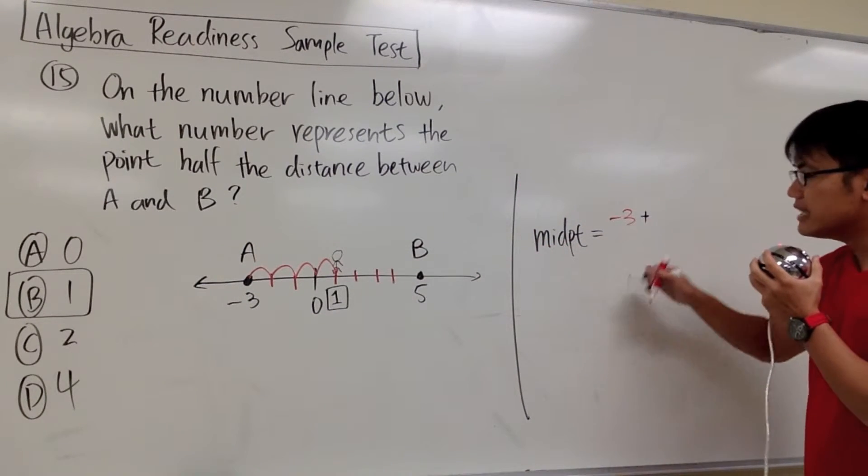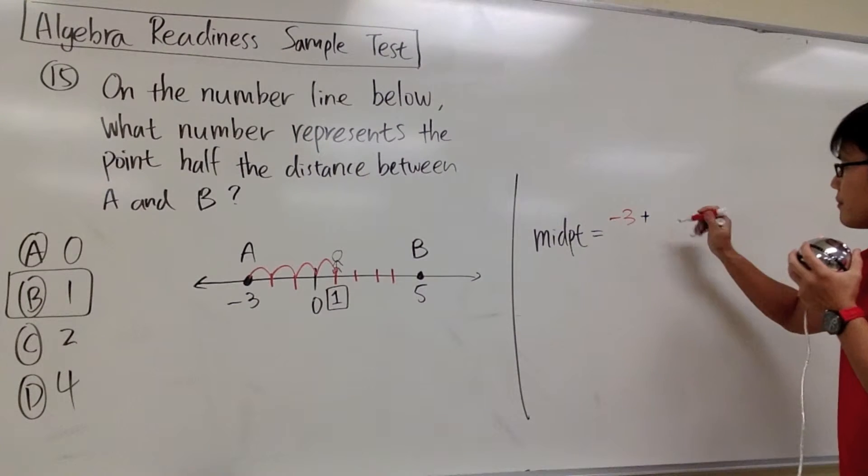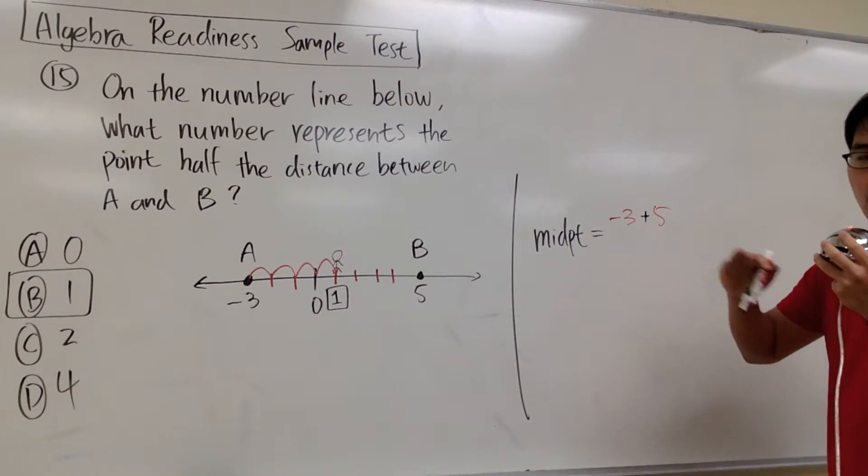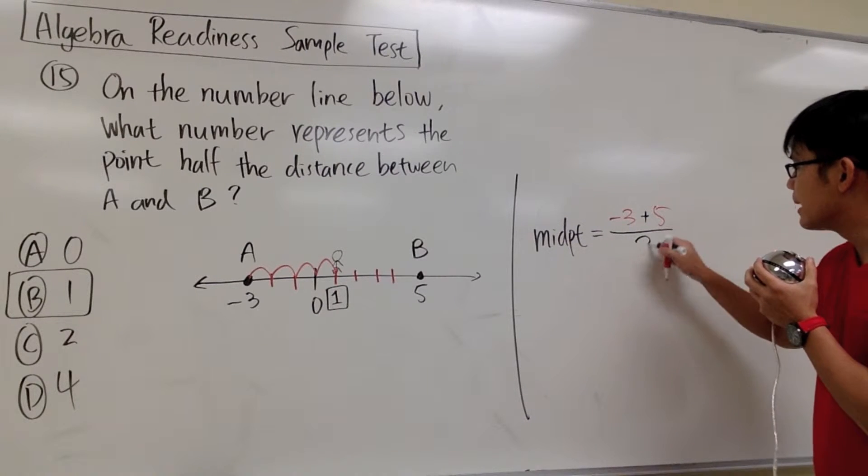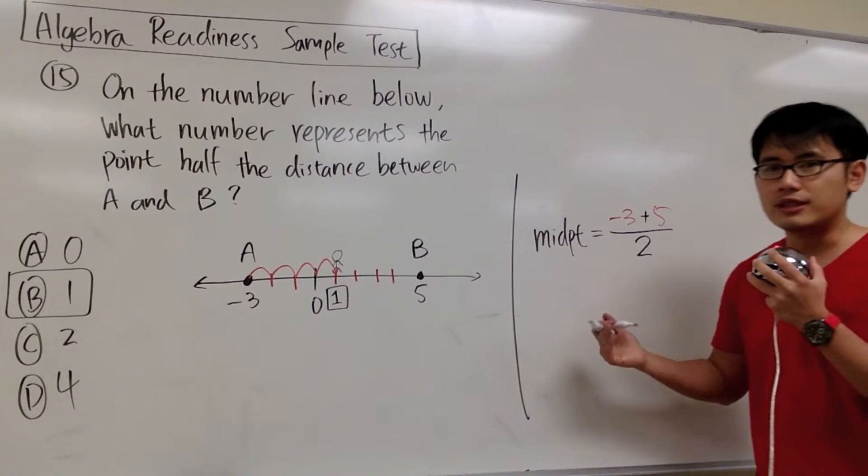And then we add it with the other endpoint, which is the 5. You always add the endpoints together, but then you also have to divide this by 2. And that's pretty much the setup.